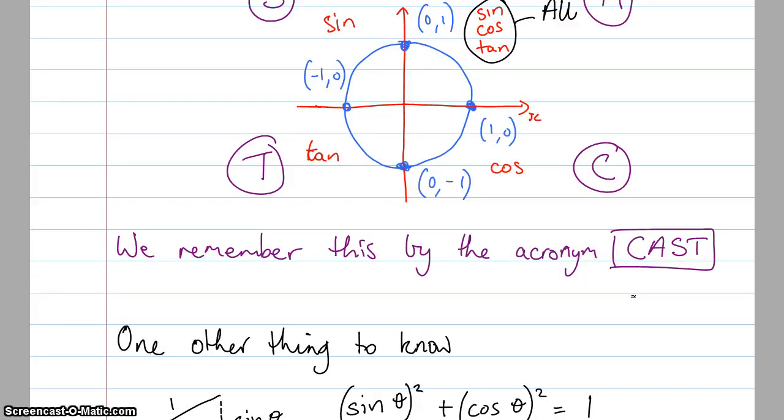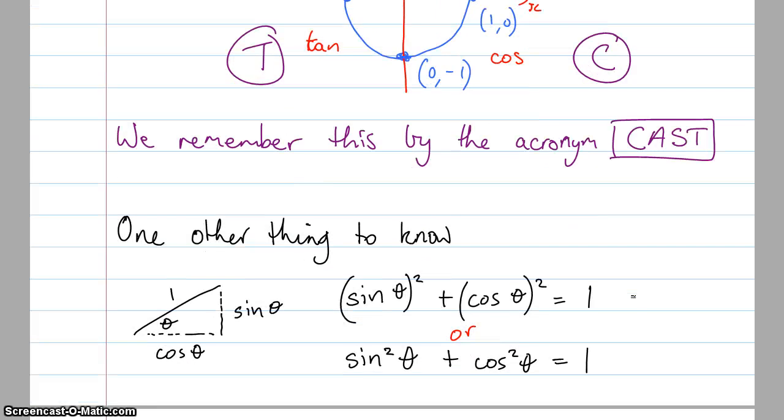One other thing that you need to know for year 12 methods. If I've got this little triangle here, I've got cos theta there, sine theta there, and 1. As well as using trigonometry, I can use Pythagoras theorem. Sine squared theta plus cos squared theta, a squared plus b squared, will equal c squared, and that just being 1. So therefore, I can actually say that sine squared theta is actually equal to 1 minus cos squared theta, and vice versa as well.